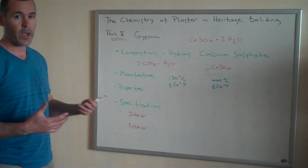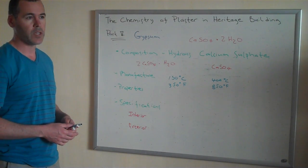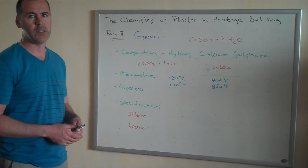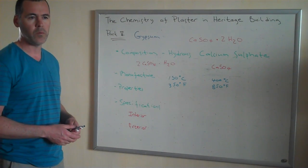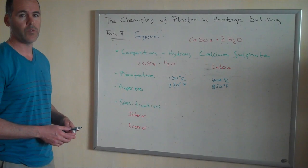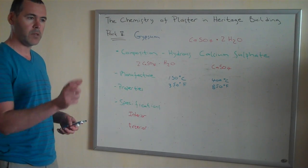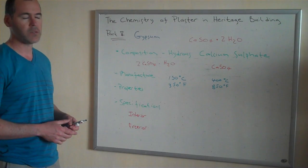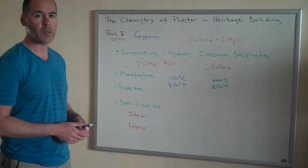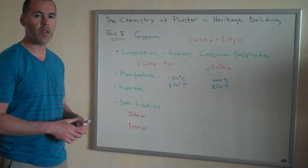What that means in practical terms as a plaster is it's not as dependent on aggregates or fibrous materials for strength. Its ability to self-bind allows it to be built up in very thick coats. It's not a problem to apply gypsum two inches thick at a time.